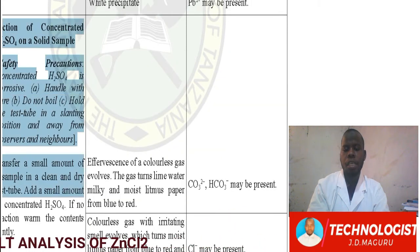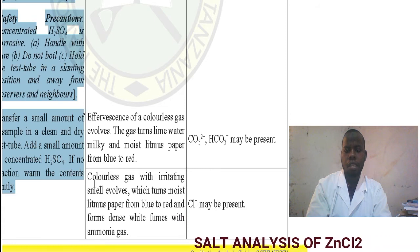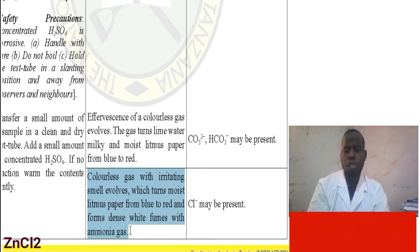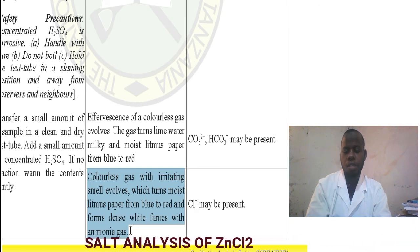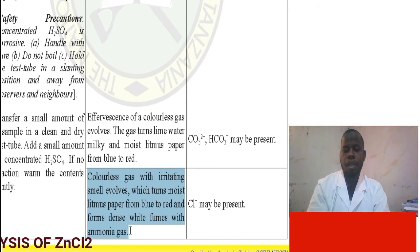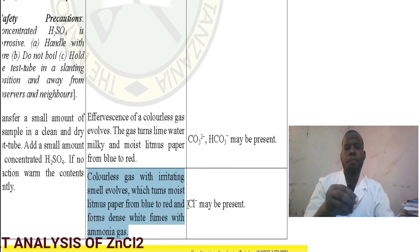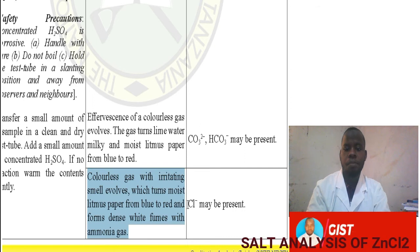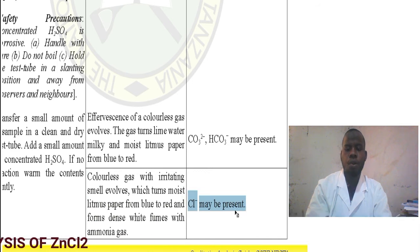The next action is the action of concentrated sulfuric acid. On adding concentrated sulfuric acid, the observation would be a colorless gas with an irritating smell will be evolved. When you take a test tube with ammonia solution and pass it through the mouth of the tube, you will see a dense white fume that represents chloride gas. The inference is that chloride ion may be present.